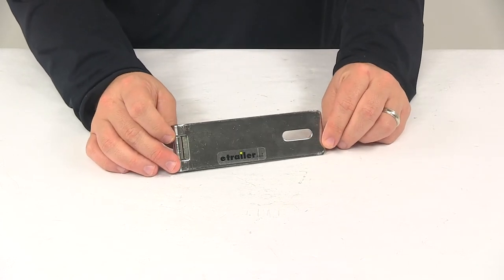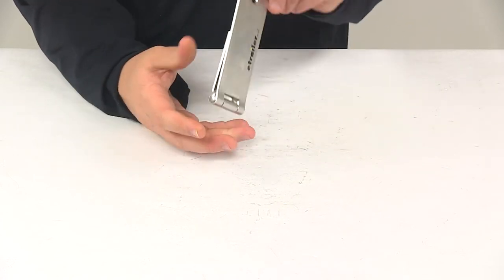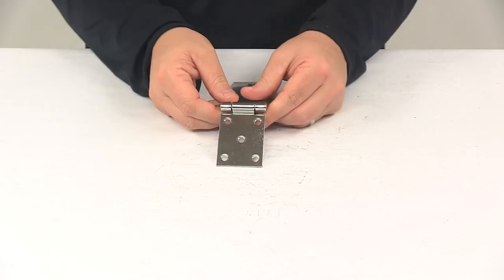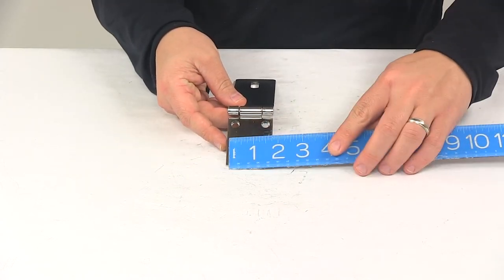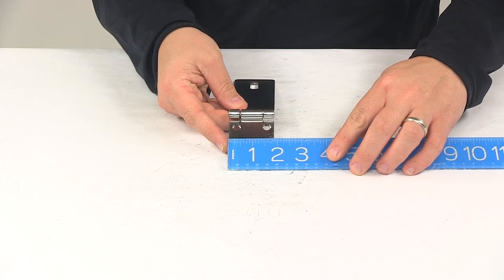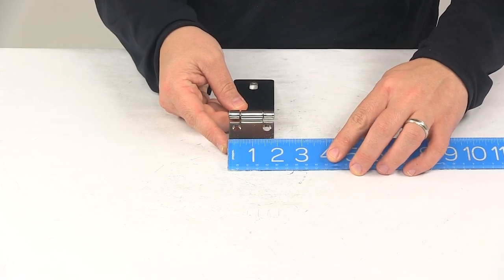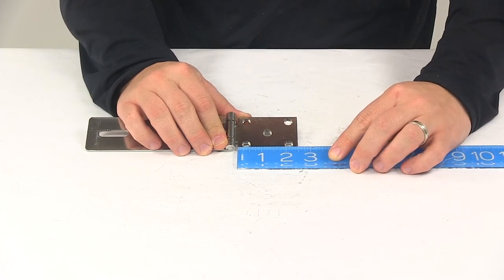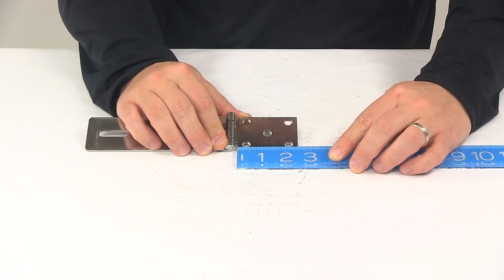Staple and lock are sold separately. You can find those at eTrailer.com. The mount holes on the unit, these are all going to have a diameter of a quarter of an inch, and then that mounting plate measures one and seven-eighths of an inch by two and a half inches long.